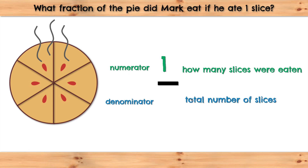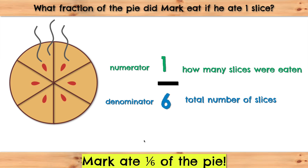The denominator is the total number of slices. Let's check how many slices this pie has: one, two, three, four, five, six. The denominator will have to be six. So, Mark ate one-sixth of the pie.